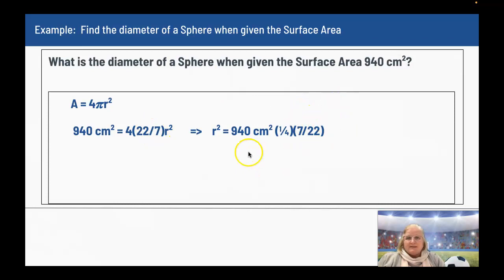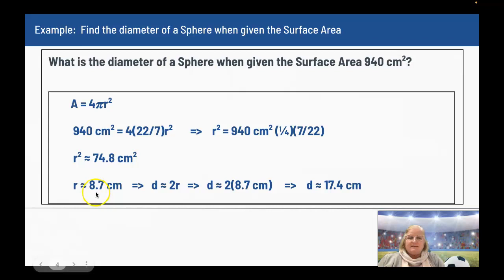So when I plug this into a calculator, I'm going to take 940 times 1 times 7, and then I'm going to divide by 4, and then I'm going to divide by 22. I ended up with 74.8 centimeters squared. I want the radius. I don't want the radius squared, so I take the square root of 74.8. I get approximately 8.7 centimeters.